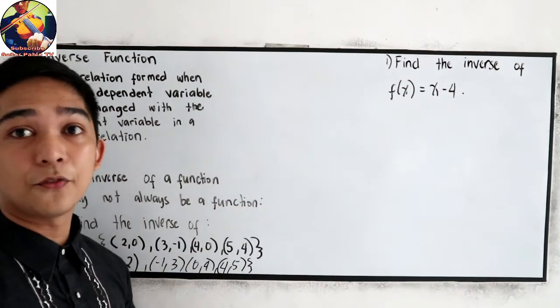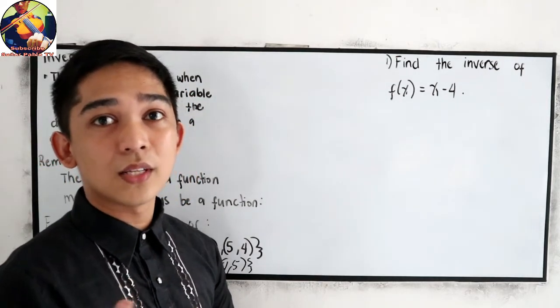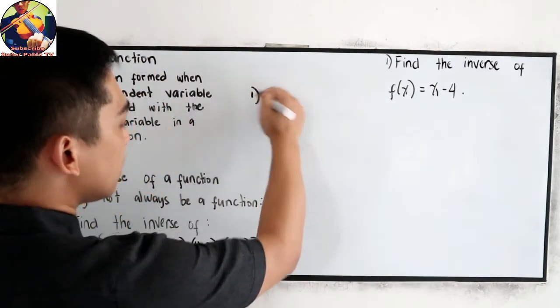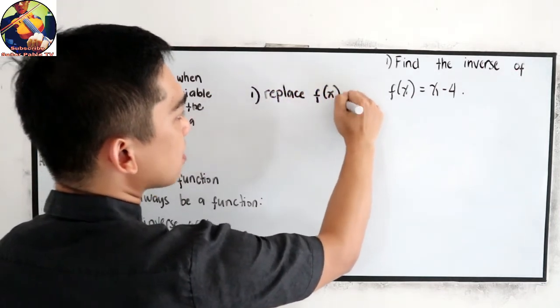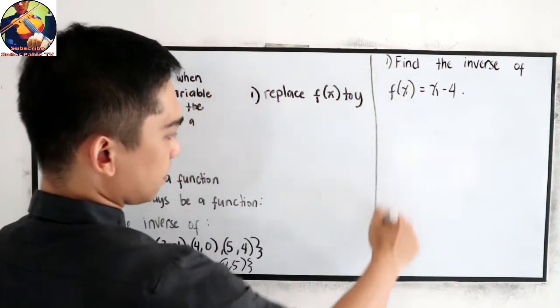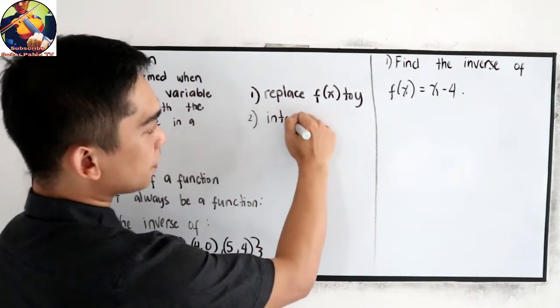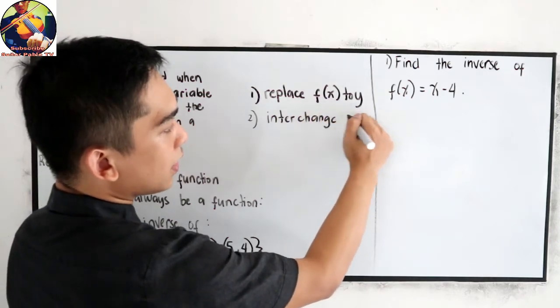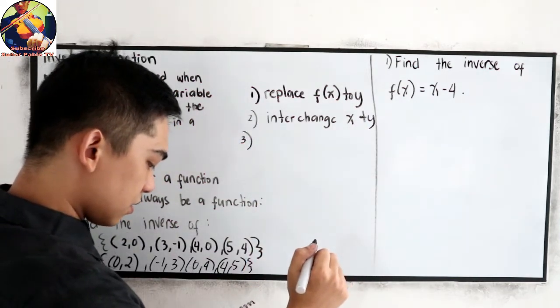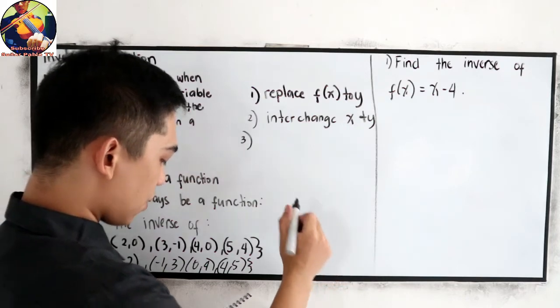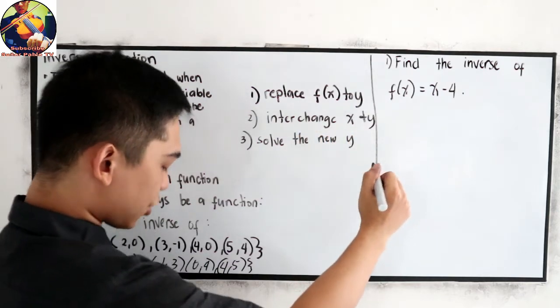So I will write the four steps so that you will know the step-by-step process. Number one, replace f(x) by y. Number two, interchange x and y. Number three, solve the new y from the equation in step two.